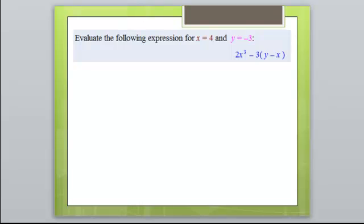So let's evaluate this expression if x is 4 and y is negative 3. What we want to do is just replace all of these variables with these values. So we're going to have 2 times something cubed minus 3 times something minus something. Instead of those somethings, we're going to put these variable values in there. Everywhere there's an x, I'm going to put a 4. Everywhere there's a y, I'm going to put a negative 3.